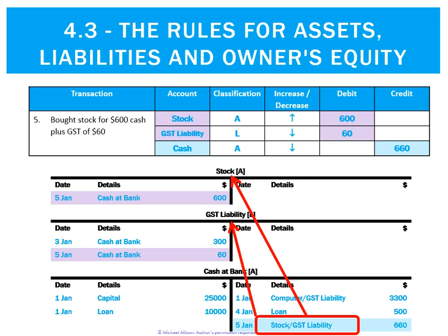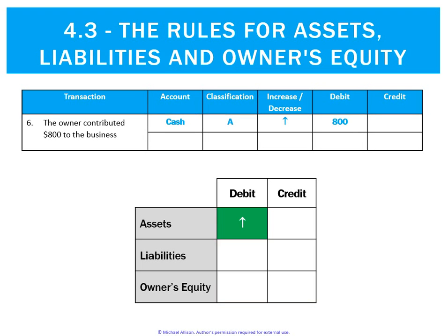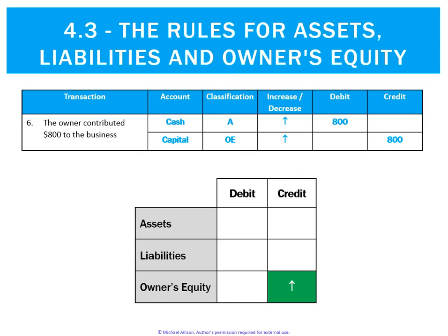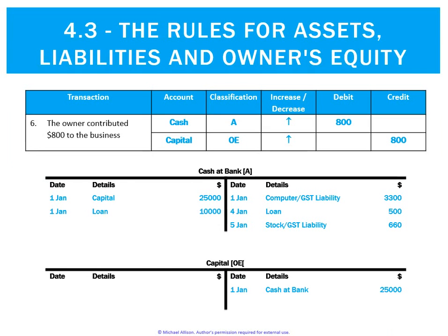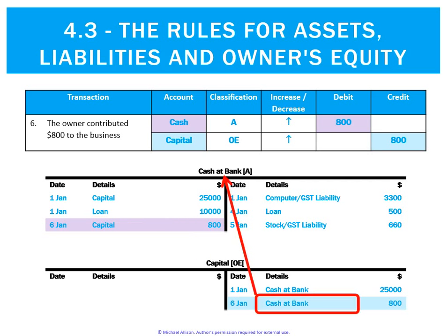Lastly, the owner contributed $800 to the business. The business has more cash, which is an asset — that's a debit. It also has more capital, which is an owners equity account increasing — that goes on the credit side. Posting the ledger: debit to cash, credit to capital. Referencing is straightforward: write 'capital' in the cash ledger and 'cash at bank' in the capital ledger.